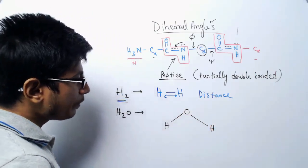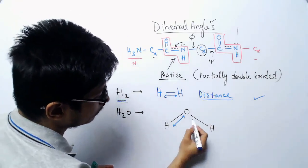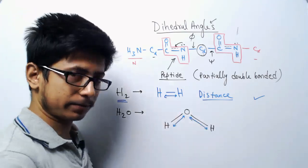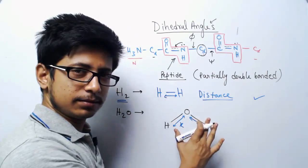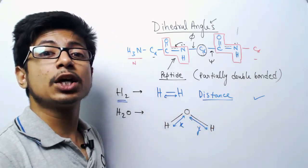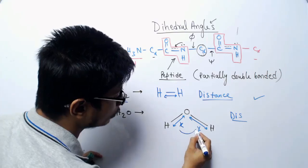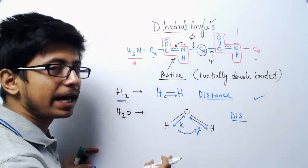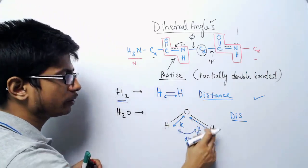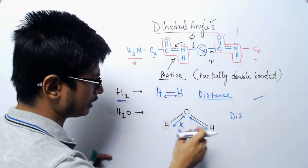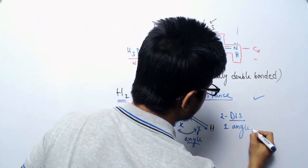If you take water, oxygen is attached to two hydrogens. Earlier, only distance was needed to get the geometry. But here, even if you know the distances between oxygen and each hydrogen, that is not enough — the answer is no. In this case, you also need to talk about the angle between the two hydrogens linked with oxygen. So for three atoms, you need two distances and one angle to get the geometry correct.